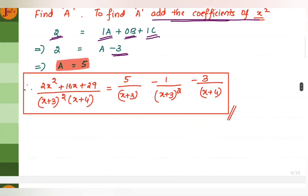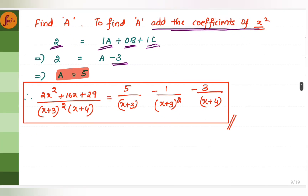We substitute all values of a, b, and c into the expression. With this, I have come to the end of the revision for partial fractions. It is a simple chapter and we can easily score marks in this topic. Thanks for watching.